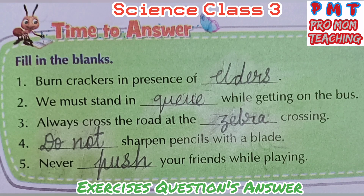Fill in the blanks. First, burn crackers in the presence of elders. Second, we must stand in a queue while getting on the bus. Third, always cross the road at the zebra crossing. Fourth, do not sharpen pencils with a blade. Fifth, never push your friends while playing.